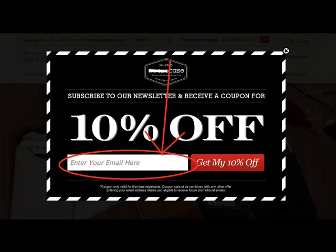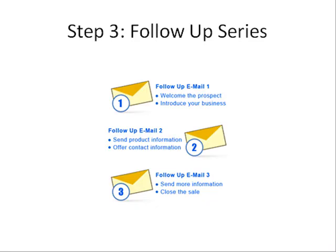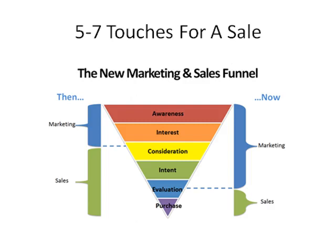Studies show that most people do need seven points of contact before they will buy anything at all, which moves us on to Step 3. You'll need to have a series of emails which you'll use to follow up with anyone who signs up for your discount or your valuable report. What this will do is increase the chances of them buying your products and services.